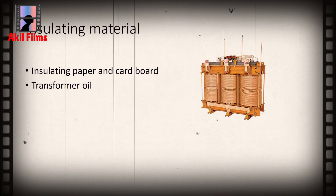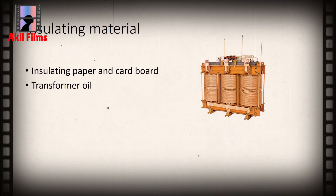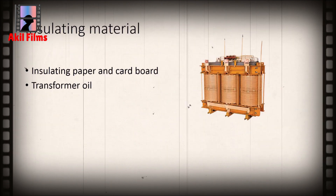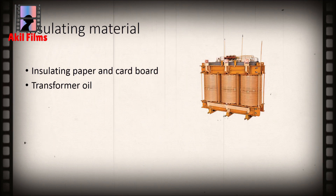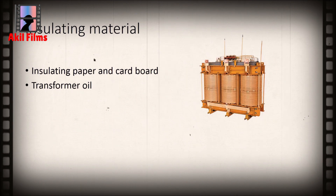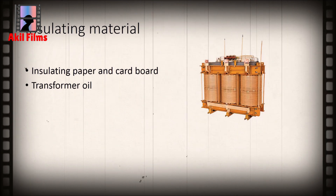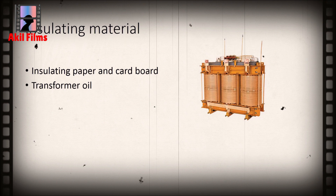Insulating paper and cardboard are used in transformers to isolate the primary and secondary windings from each other and from the transformer core.